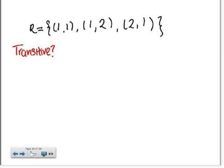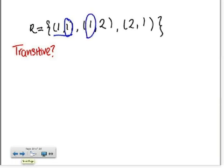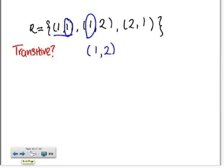We're going to go through a simple example to see if a relation is transitive. Looking at the first element, we see the second number is a 1, so we look for an ordered pair that also begins with 1. We find one, so the pair formed by the outer elements should also be in the set. However, that ordered pair is not in the set, so we know that this relation is not transitive.